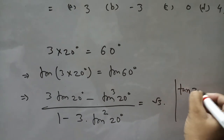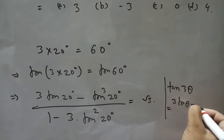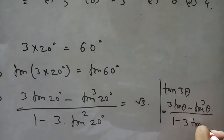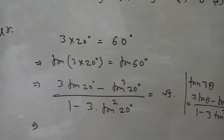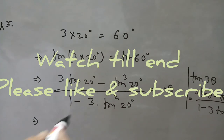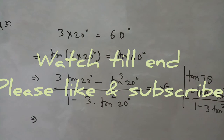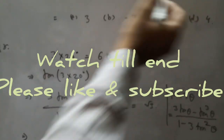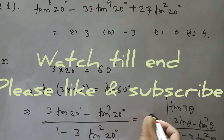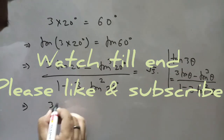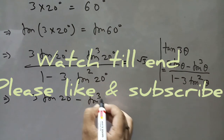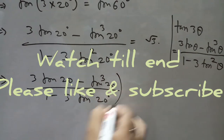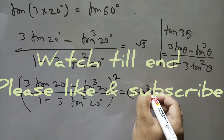The formula is tan(3θ) = (3 tan θ − tan³θ) / (1 − 3 tan²θ). Now we will cross multiply. Before cross multiplying, we square both sides because the given problem has a root — to eliminate the root we square both sides: (3 tan 20° − tan³ 20°) / (1 − 3 tan² 20°), whole squared, equals (√3)² = 3.